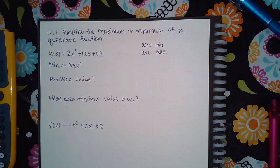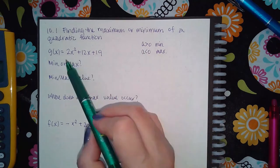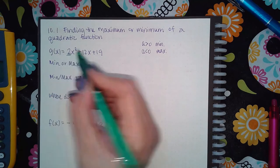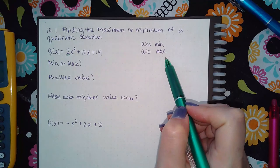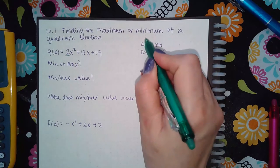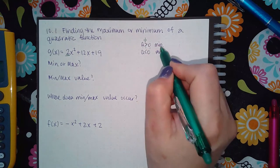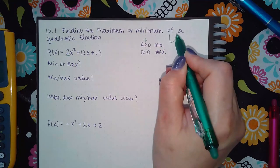Here we have 10.1 finding the maximum or minimum of a quadratic function, and so we definitely need to pay attention to the a value to determine whether or not it actually is a minimum or maximum. If the a value is positive, which is greater than zero, then it's a minimum because it'll be opening upward.